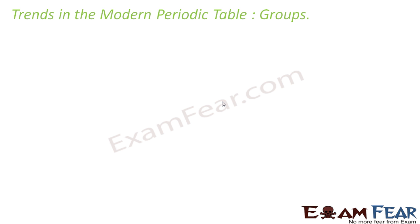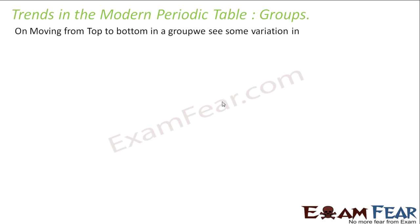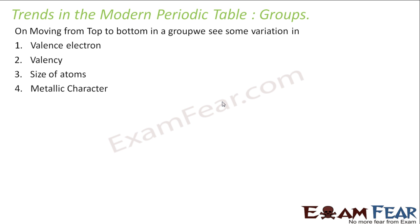Now we'll learn some trends in the group. If you go from top to bottom, we see some variation in the valence electrons, valency, size of atom, metallic character, chemical reactivity, and nature of oxides. So we'll learn these.